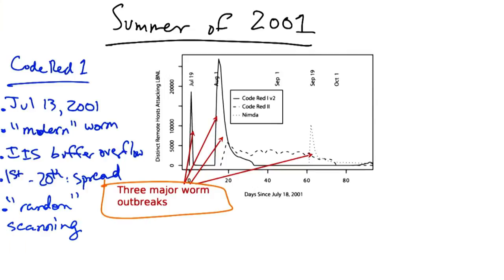It would spawn 99 new threads which generated IP addresses at random and then looked for vulnerable instances of IIS. Version 2 of Code Red 1 was actually released six days later and fixed the random scanning bug so that each instance of the worm scanned a different part of IP address space.